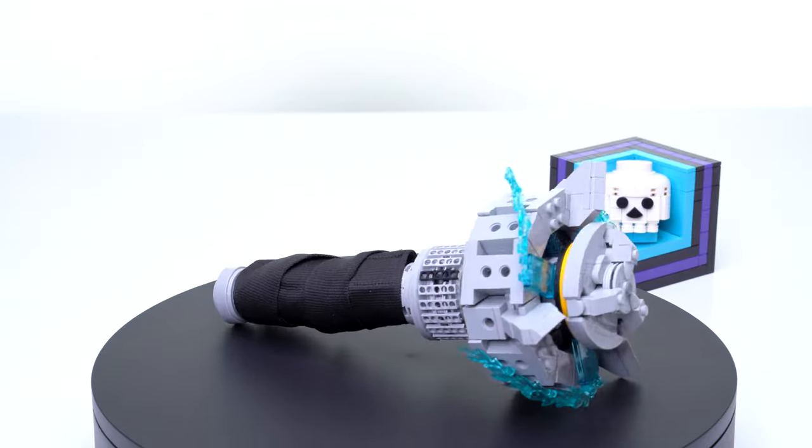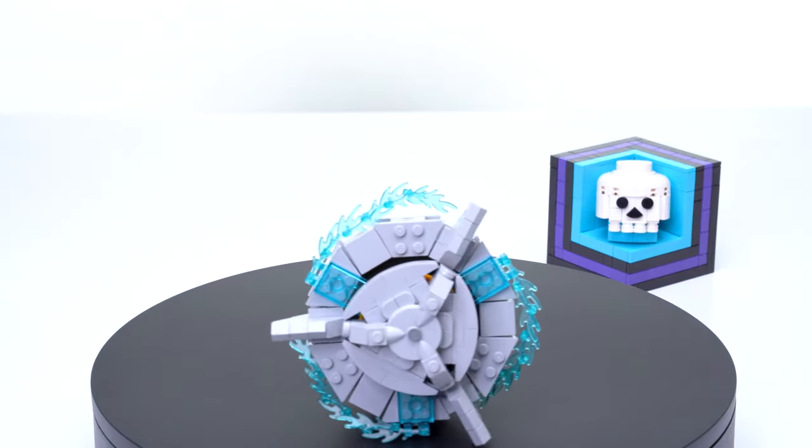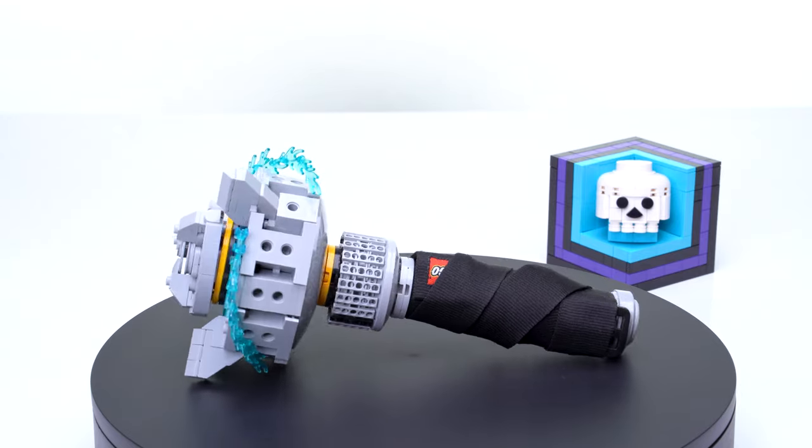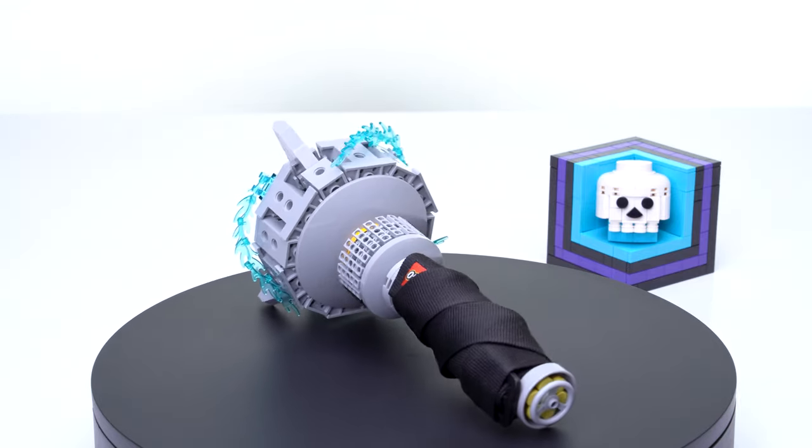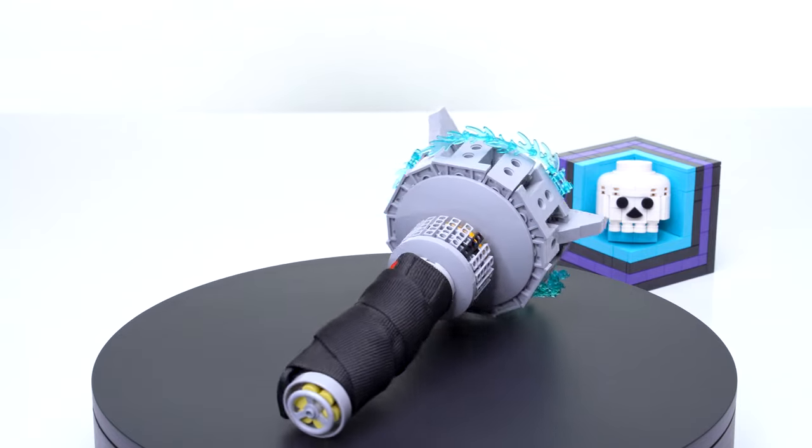But you don't have to worry about any of that with the LEGO version. It's entirely made out of plastic and cloth. The LEGO Dynamo Grenade is 9 inches long, and 4.5 inches across at the head of the grenade.